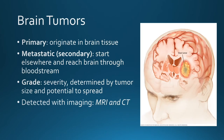Brain tumors are classified based on various categories. First, it could be where they originate. If they originate in the brain tissue itself, they are called primary tumors. If they originate in another tissue such as the skin, colon, kidney, lung, or breast, and then travel to the brain, these are called secondary or metastatic tumors.